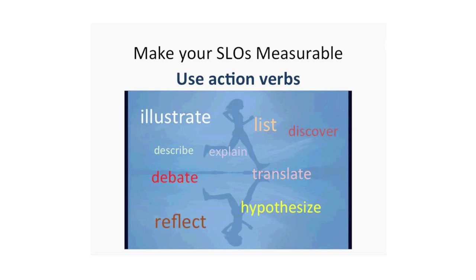We talked about what is an SLO. Now I'm going to talk about how to make your SLOs measurable. One of the most effective strategies is to use action verbs. Try to avoid vague verbs such as 'understand' or 'know,' because you really want students to demonstrate their learning. Use action verbs — for example, if you want students to be able to debate, use a debate task as your assessment. This will also help you to organize your learning activities.